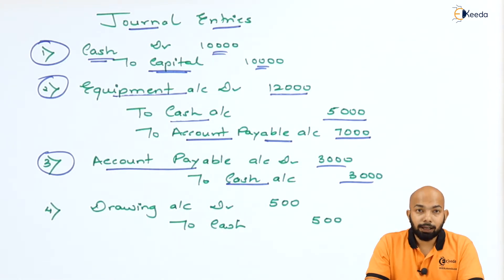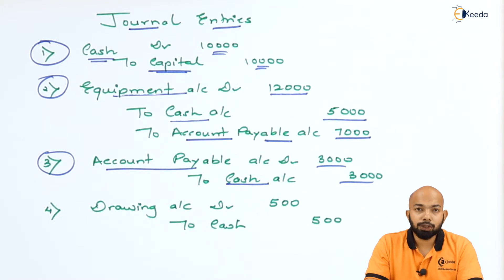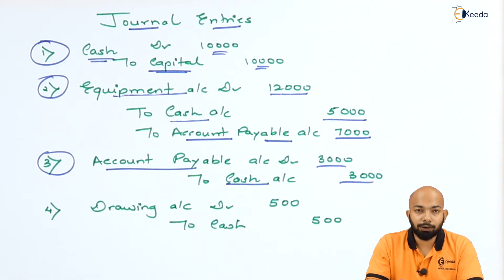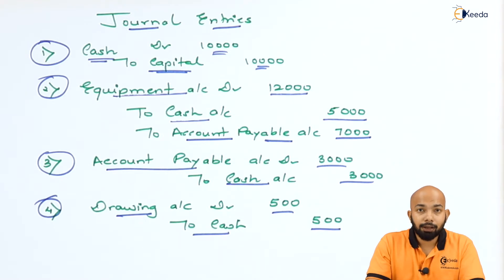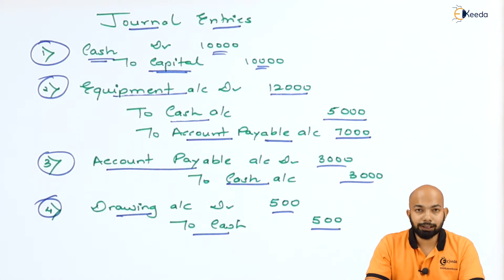For the last entry, there is a drawing. Drawing is an expense for the business. The entry is: Drawings Account debited to Cash Account, since ₹500 cash has been withdrawn as drawings. The amount has been highlighted here.